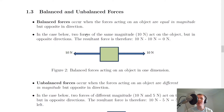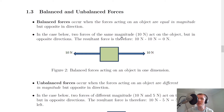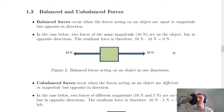Balanced forces occur when the forces acting on an object are equal in magnitude but opposite in direction. Here's an example: two forces of the same magnitude, which is 10 newtons, act on the object but in opposite directions — 10 newtons this way and 10 newtons this way. The resultant force is therefore 10 newtons minus 10 newtons, which equals 0 newtons. The two forces acting in opposite directions cancel out because they are equal in size. So in this case the object would stay where it is, or it would continue to travel at a constant speed if it was already moving.